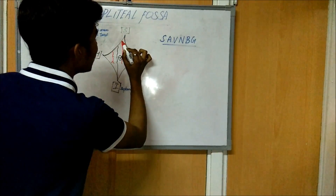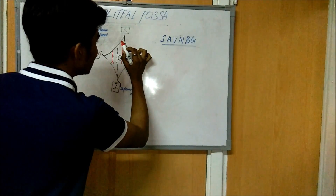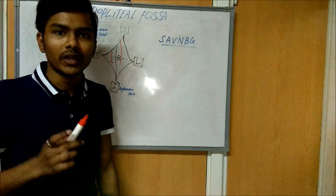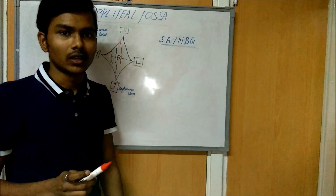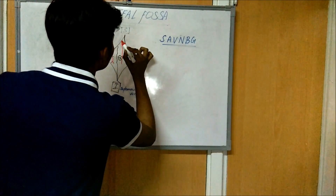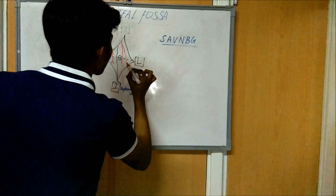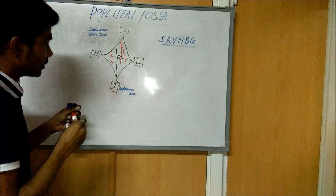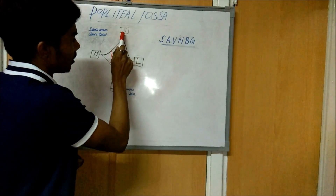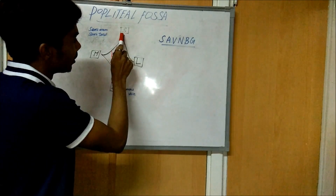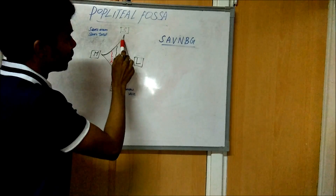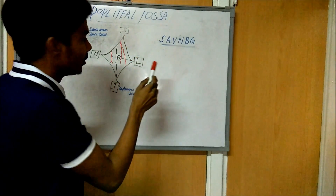Then we have the tibial nerve, and one more nerve which rises from the same point as the tibial nerve — that is the common peroneal nerve, also called the common fibular nerve. These two nerves come from the sciatic nerve. The sciatic nerve originated and has two branches: one is the tibial nerve and the other is the common fibular or peroneal nerve.